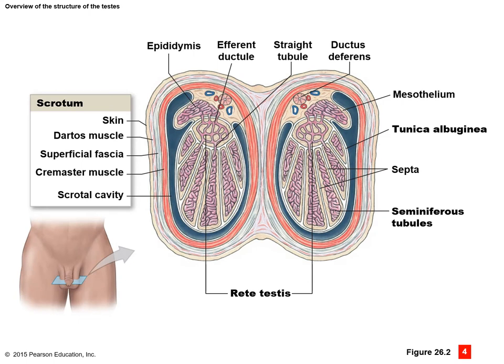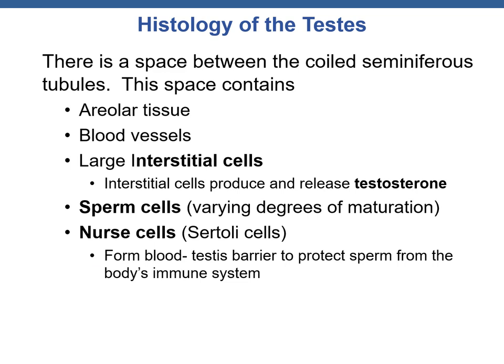Here we can see a diagram of this. Note the seminiferous tubules that connect to the rete testis via the straight tubule, and the rete testis connects via the efferent ductule to the epididymis — the site of sperm maturation. In the histology of the testis, the space between the coiled seminiferous tubules contains an areolar connective tissue, blood vessels, and interstitial cells. These interstitial cells are the cells that produce and release testosterone. There are also sperm cells with varying degrees of maturation and nurse cells, called Sertoli cells, which form the blood-testis barrier to protect sperm from the body's immune system.